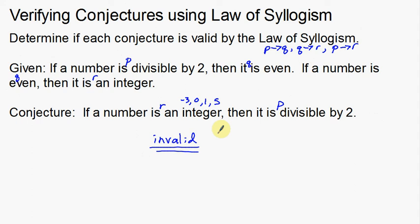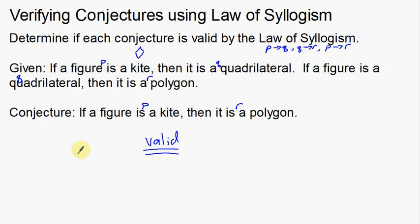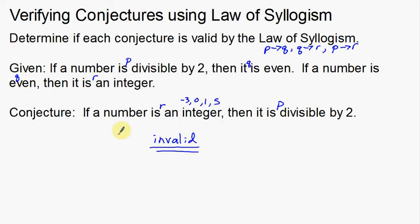Just to recap: the first example followed a logical progression — P then Q, Q then R, and then P then R — so that was a valid statement. A good strategy is to label your hypothesis and conclusions. In the second example, we did the same labeling, but the final conjecture was out of order — if R then P — so it was invalid. If you don't follow that quite easily, just think about it logically: none of those integer examples were divisible by 2, confirming the invalid statement. That's a valid and an invalid example of verifying conjectures using the Law of Syllogism.